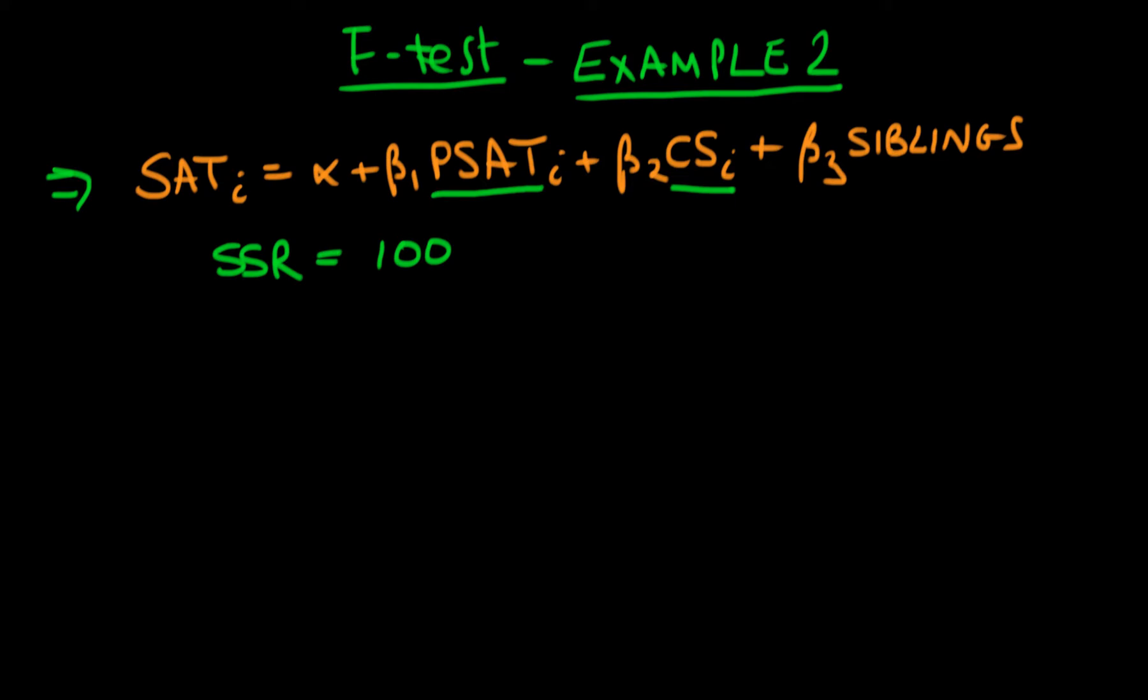And let's say we ran this regression and the T stats on parental SAT scores was quite high. So it's quite obvious that parental SATs seem to have some sort of explanatory ability in terms of explaining how well an individual does in their SATs. But let's say that the T statistics on beta 2 and beta 3, in other words our coefficients on classroom size and siblings, were marginal so that they weren't quite significant. So our null hypothesis here is going to be that the coefficients on classroom size and the number of siblings are both jointly equal to zero. So that's beta 2 equals beta 3 which equals zero.